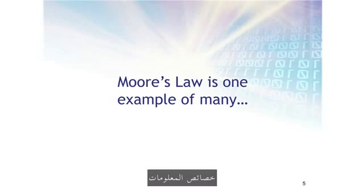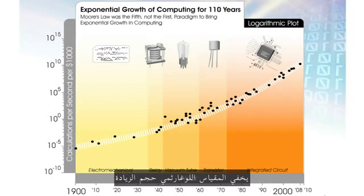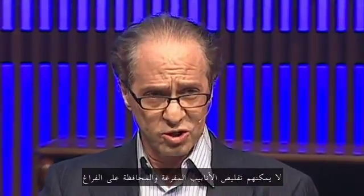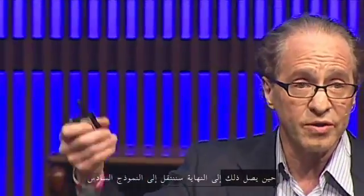The exponential growth of computing started decades before Gordon Moore was even born, and it doesn't just apply to computation — it's really any technology where we can measure the underlying information properties. In the 1950s there were shrinking vacuum tubes, making them smaller and smaller, until that hit a wall. But it was not the end of exponential growth. We went to the fourth paradigm — transistors, and finally integrated circuits. When that comes to an end, we'll go to the sixth paradigm: three-dimensional self-organizing molecular circuits.